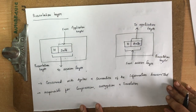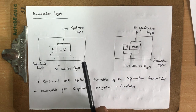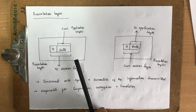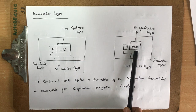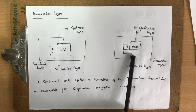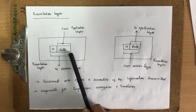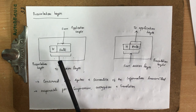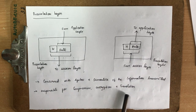The presentation layer ensures the syntax and semantics of the information exchanged. The format of the data must be understood by both sender and receiver — if the sender sends in one format and the receiver cannot understand it, the message will not be correctly received. This layer handles syntax and semantics, and is also responsible for compression, encryption, and translation.